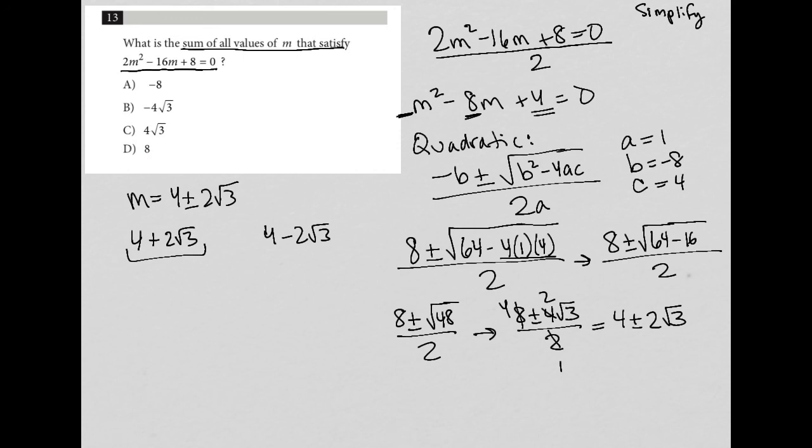And when I add those together, right, the sum of those, 4 plus 4 is 8. 2 root 3 minus 2 root 3 crosses out, leaving me with 8 as my final answer.